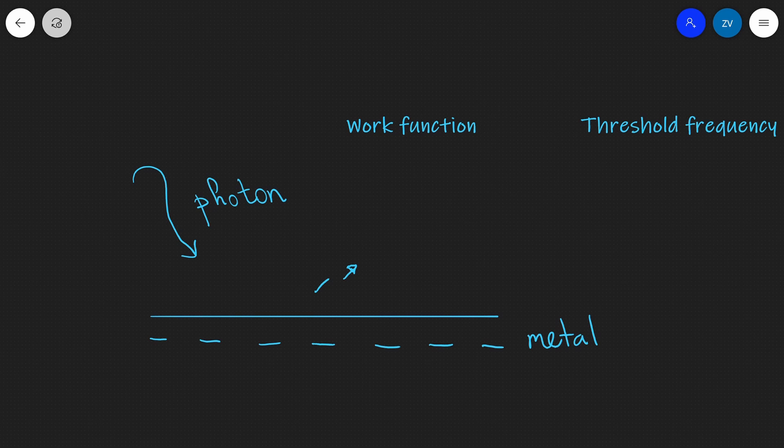So, any time there is an emission of an electron from the surface of a metal, the photoelectric effect occurs. The work function is the minimum energy required to release an electron from the surface of a metal.